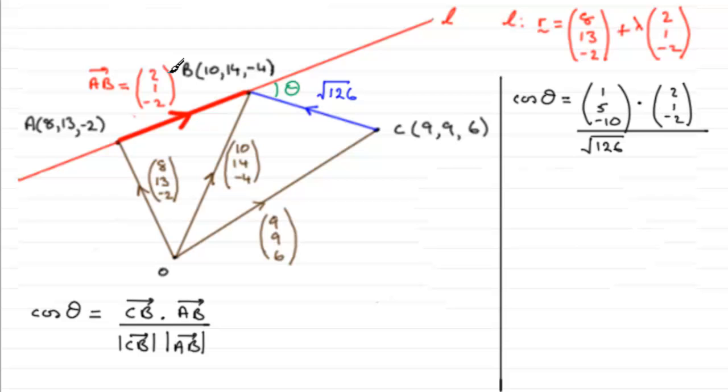And we now need to multiply this with the magnitude of the vector A to B. And the usual way, we'll do the sum of the squares of these components. So that would be 2 squared plus 1 squared plus 2 squared. You don't have to put that minus in.